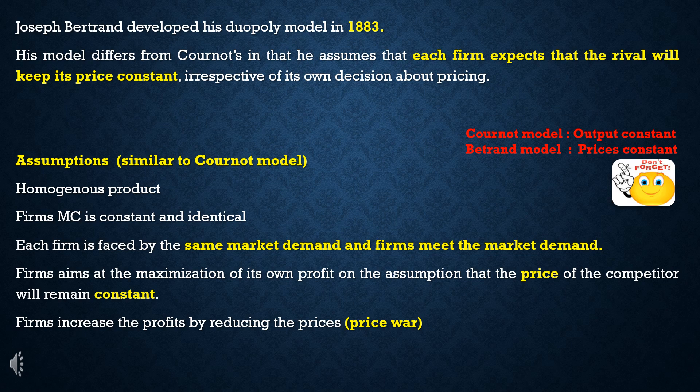Here are the major assumptions. First assumption: homogeneous product. Second: the firm's marginal cost is constant and identical. Third: each firm faces the same market demand — the total market demand is shared between the two firms. Fourth: firms aim at maximization of their own profit on the assumption that the price of the competitor will remain constant.